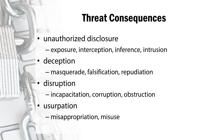RFC 2828 describes four kinds of threat consequences and kinds of attacks that result in: unauthorized disclosure of information, leading to a threat to the confidentiality of the data; deception, which is a threat to system and data integrity; disruption, causing a threat to system availability and system integrity; and lastly, usurpation, which is the misuse of systems, leading to a threat of system integrity.